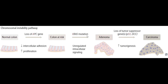The second step is a KRAS mutation, which leads to unregulated intracellular signaling. The cancer cells are already proliferating, and now there's unregulated signaling to upregulate protein production and cytoskeletal elements — essentially everything cancer cells need to survive. This KRAS mutation leads to the formation of polyps and we start to get our adenoma, that benign tumor-like mass beginning to grow.